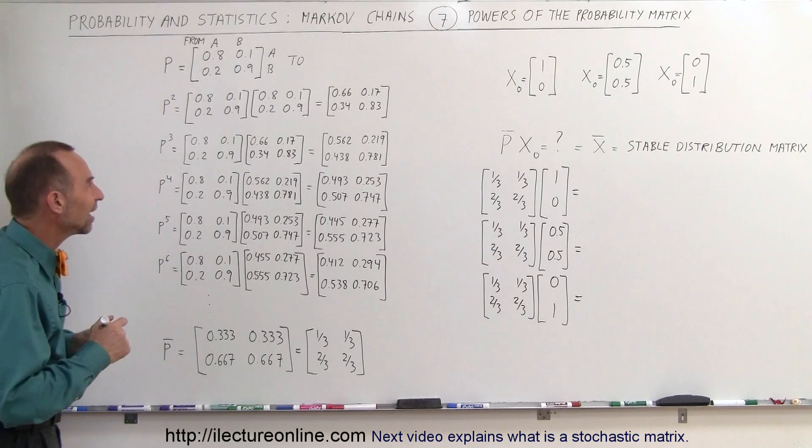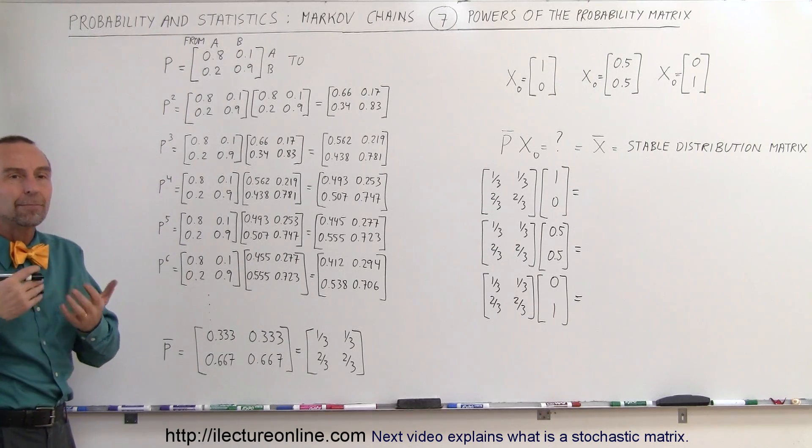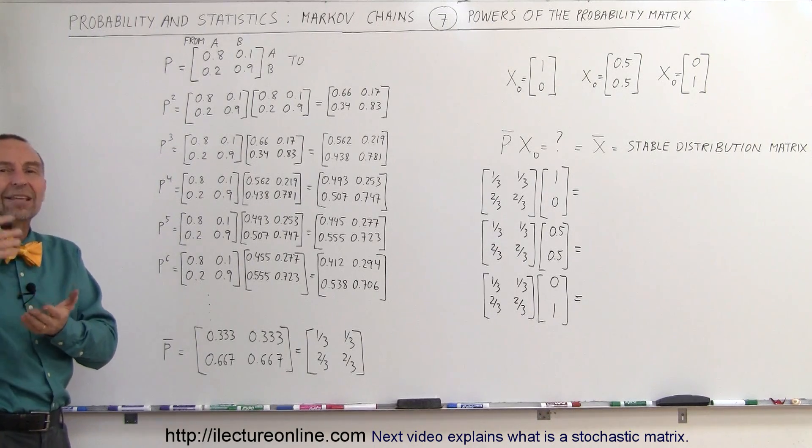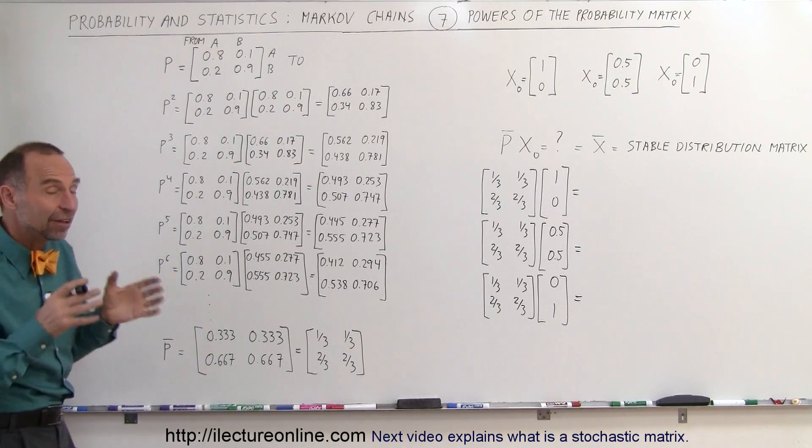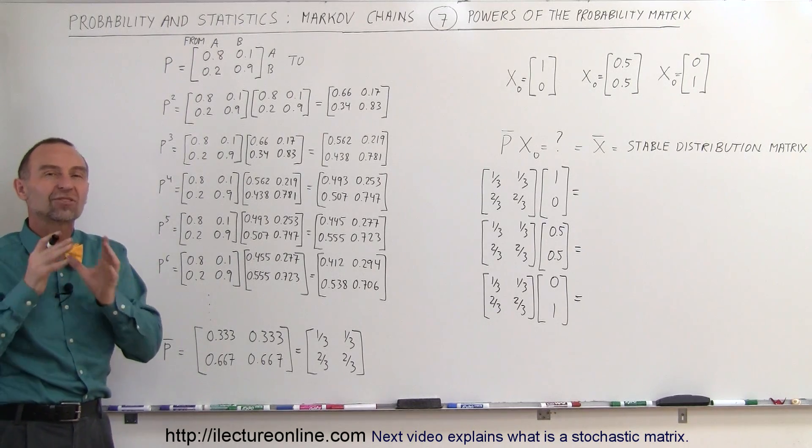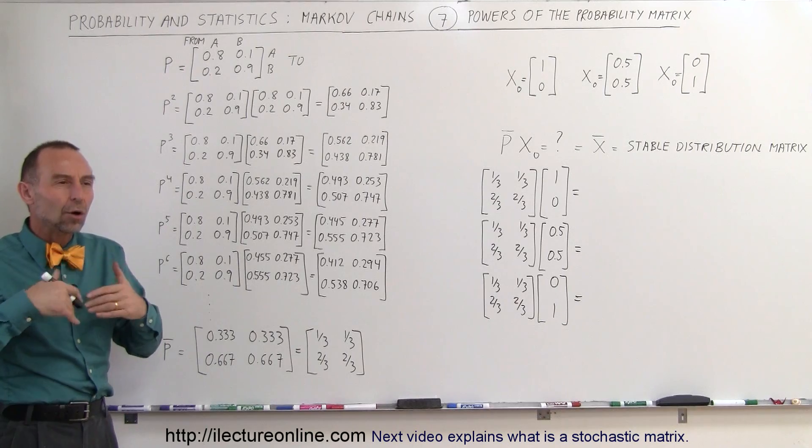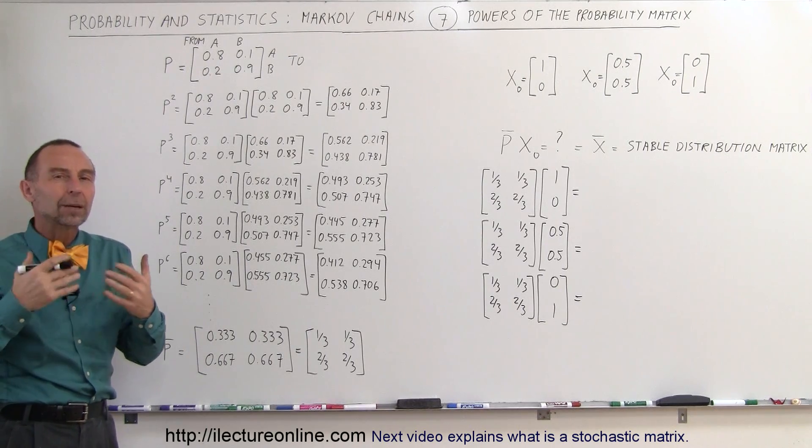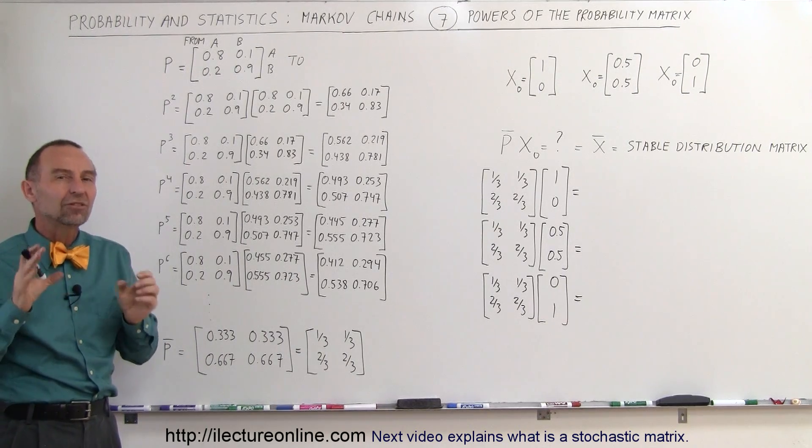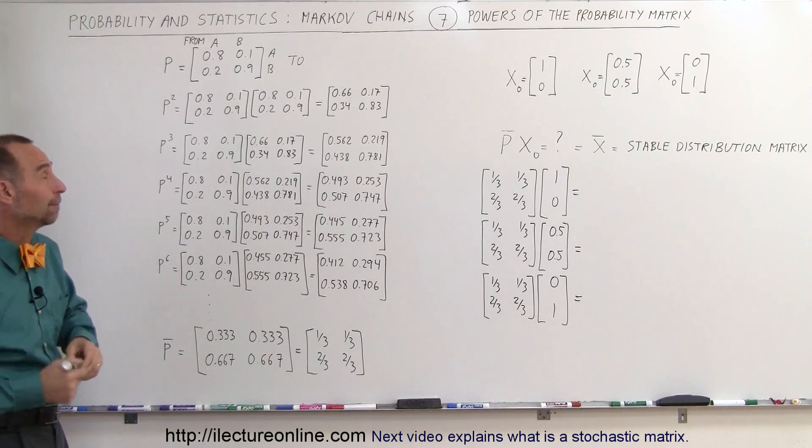Now what happens is, let's say we try to find P, the probability matrix to the nth power, to some very large number n. Well, eventually, that's also going to become stable. The probability matrix raised to the nth power will become a stable quantity, and let's go ahead and do that with this particular case and see what ends up here.